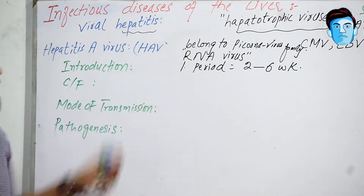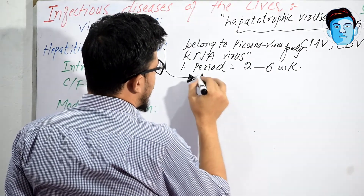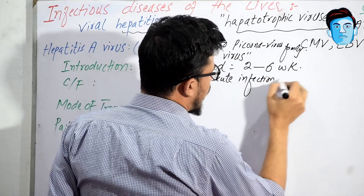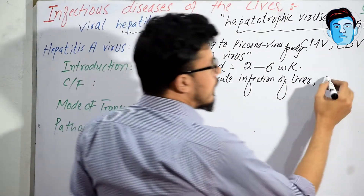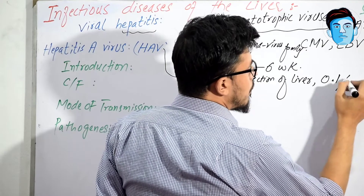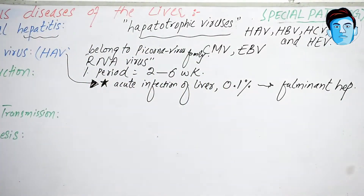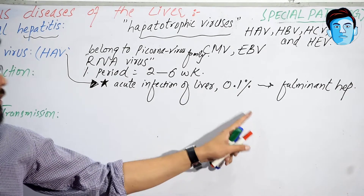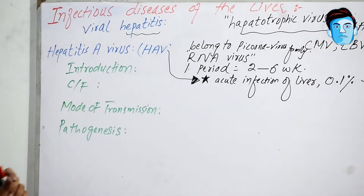The most important point regarding hepatitis A virus is that it causes acute infection of the liver. However, in 0.1 percent of cases it has been reported that it can lead to fulminant hepatitis. So hepatitis A primarily causes acute infection but in rare cases can cause fulminant hepatitis.